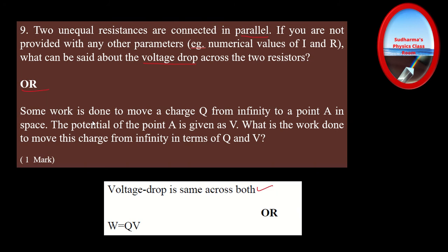The other one-mark choice: some work is done to move a charge Q from infinity to a point A. The potential of point A is V. What is the work done in terms of Q and V? This is from the basic definition of electric potential: V = W/Q, so W = QV. Just write W = QV — you do not need to explain anything more. That is exactly what the evaluation scheme expects.